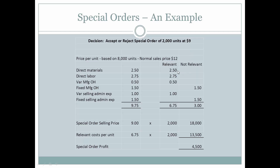The direct materials are going to be relevant because they're going to have to incur that cost in order to produce the special order, as well as the direct labor and the variable manufacturing overhead. The variable selling expenses also will be incurred as they make this order of 2,000 units. So the relevant cost to them is $6.75 per unit when considering selling at the special order price of $9.